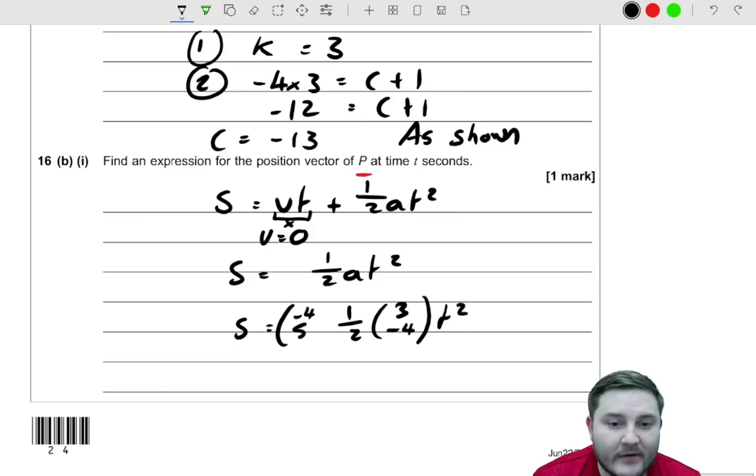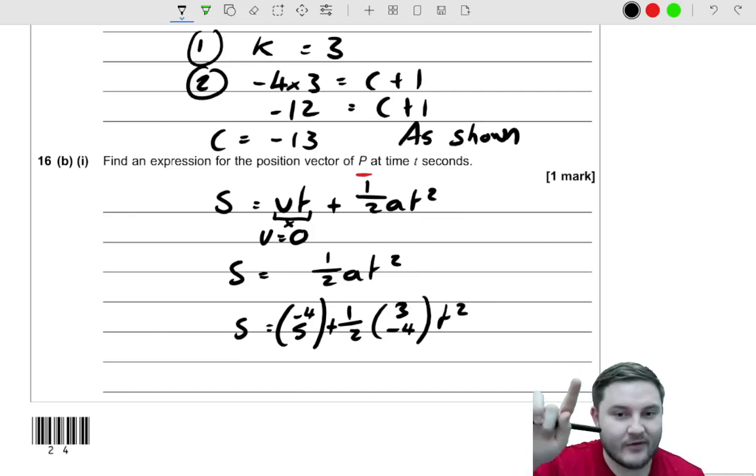(-4, 5). Because otherwise this equation is assuming that it's going to start at (0, 0), and it doesn't. It already has a positional start, which is why we have to add it on. It's like we've shifted it to that position to start with. And then the equation takes it from there and over time will change its position.